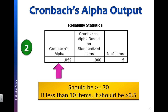Our next table is the reliability statistics. We're going to read the Cronbach's Alpha value, and we are looking for something greater than 0.7. So 0.859 is pretty good — that's what we're looking for. Now in Julie Pallant's book, The SPSS Survival Manual, she notes that if you have fewer than 10 items on a scale, it is difficult to get a high alpha, so you are looking for something above 0.5. If you have anything less than 0.5, that would be a cause for concern.